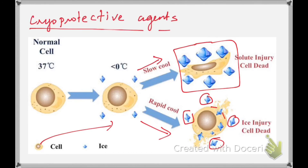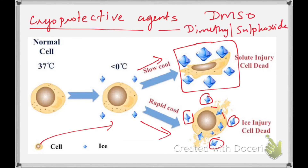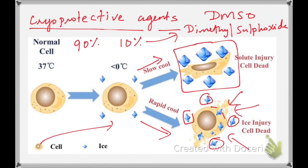One such cryoprotective agent is DMSO. Generally any freezing medium contains 90% serum and 10% DMSO. When the cell is cooled rapidly, that causes major injuries like ice crystal formation, but those injuries can be minimized by using cryoprotective agents like DMSO. DMSO covers the cell and prevents the damage done by ice crystals, so such ice crystal injuries can be minimized.